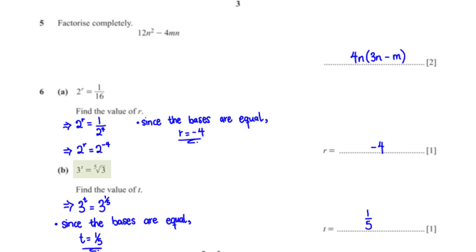3 raised to the power t is equal to the fifth square root of 3. Find the value of t. We rewrite the fifth square root of 3 as a base of 3, giving us 3 raised to the power 1 over 5. Since the bases are equal, t equals 1 over 5.